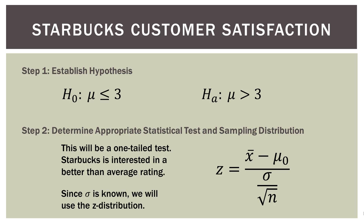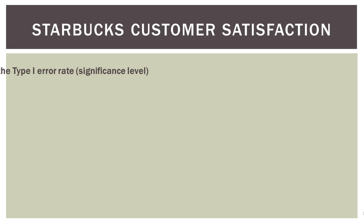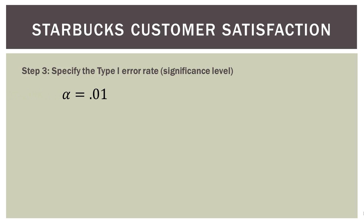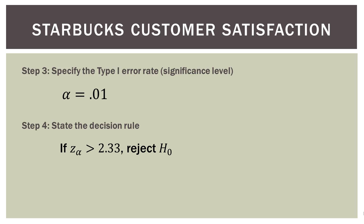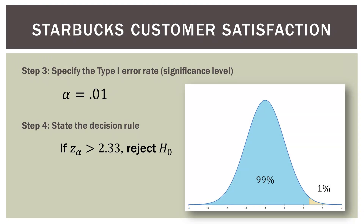Step three: specify the type one error rate. For this example, I'm going to choose alpha of 0.01, just to show some conceptual variety. Then step four: state the decision rule. If our Z value is greater than 2.33, we will reject the null hypothesis. With alpha of 0.01, we have 99% in the non-rejection region and 1% all in the upper rejection region, so our critical value is Z = 2.33, which comes from our Z table.